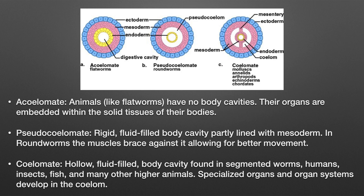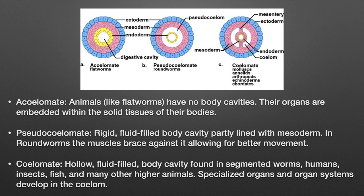Pseudocoelomates have a false coelom — a rigid, fluid-filled cavity partly lined with mesoderm cells. Roundworms use muscles braced against it for movement. Then there are coelomate creatures like us, earthworms, fish, insects, and other more complex animals — we have specialized organs like liver, gallbladder, stomach, and heart all sitting in a true body cavity. Coelomate creatures include mollusks, annelids, arthropods, echinoderms, and of course chordates, which we're not going to cover today.